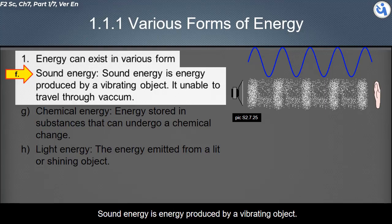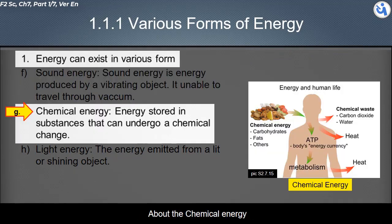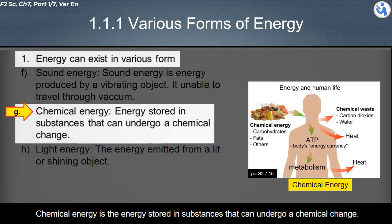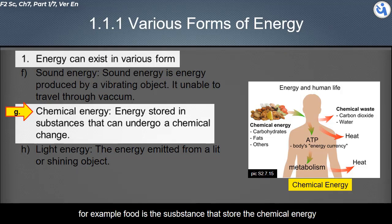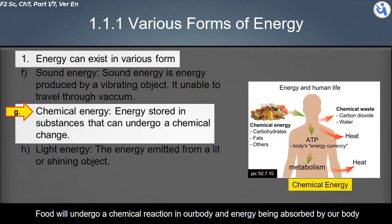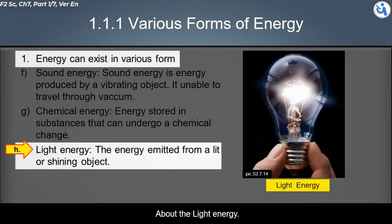Sound energy is energy produced by a vibrating object; it is unable to travel through a vacuum. Chemical energy is the energy stored in substances that can undergo a chemical change. For example, food is a substance that stores chemical energy. Food undergoes a chemical reaction in our body, and that energy is absorbed by our body.